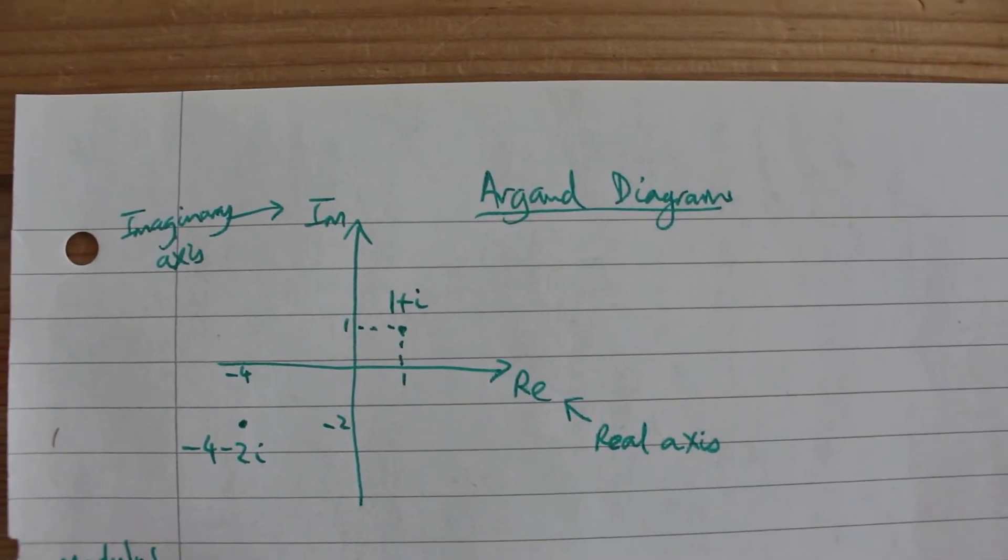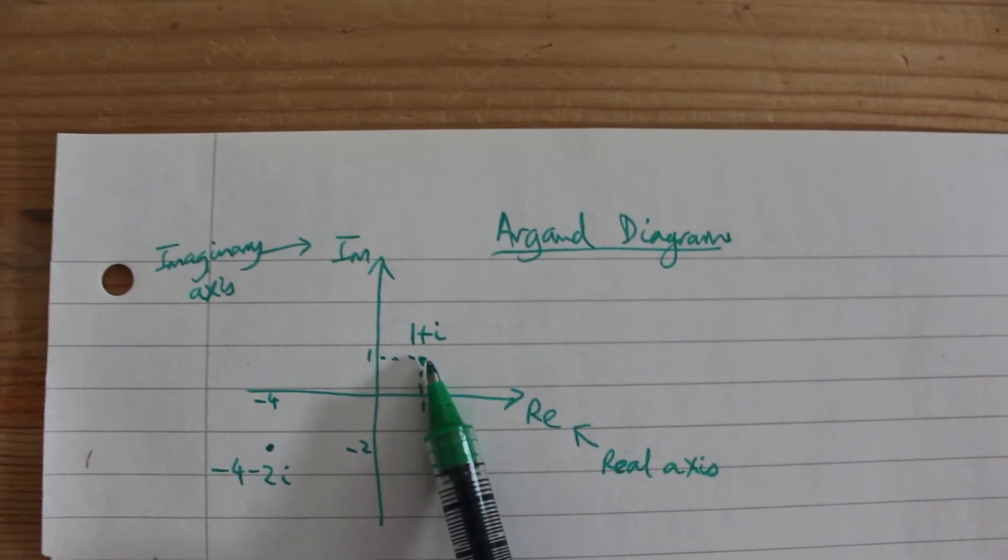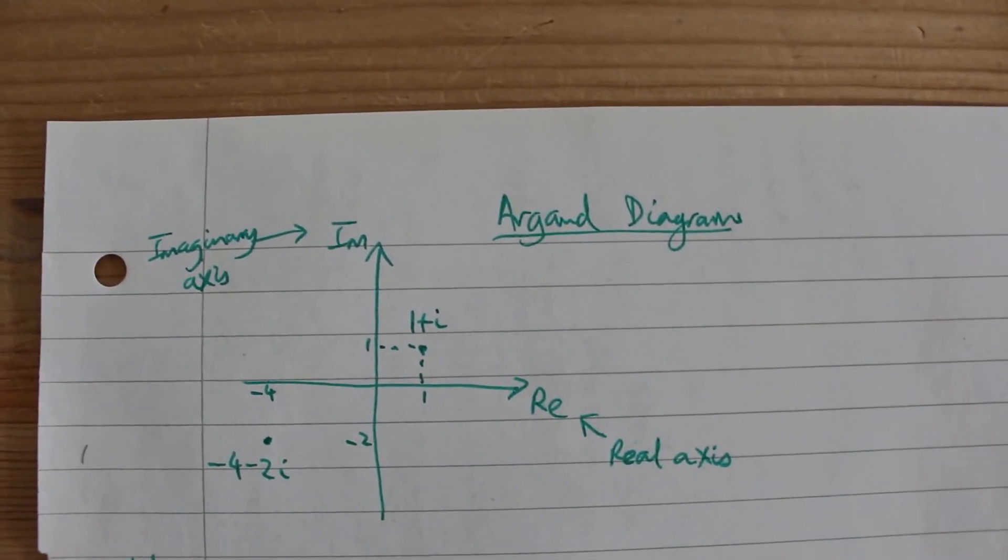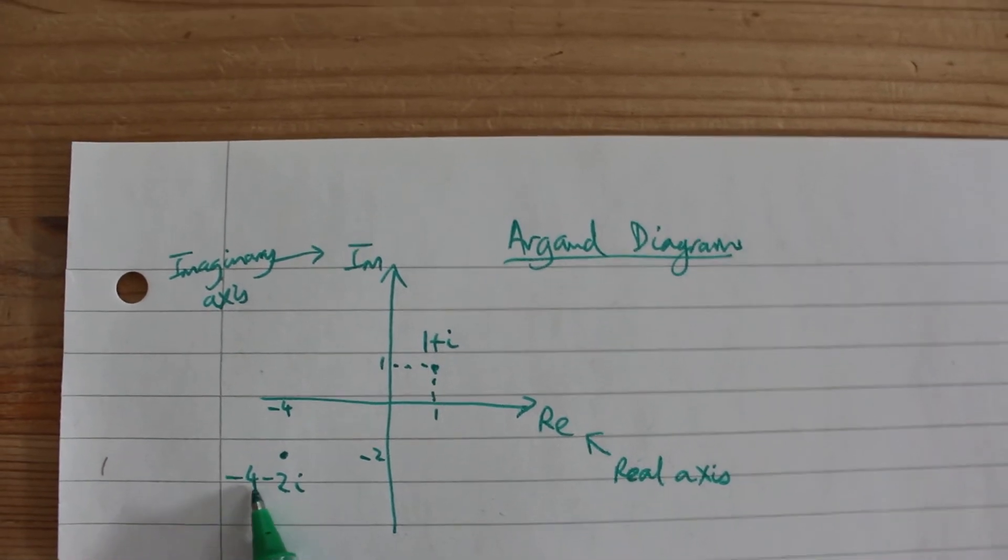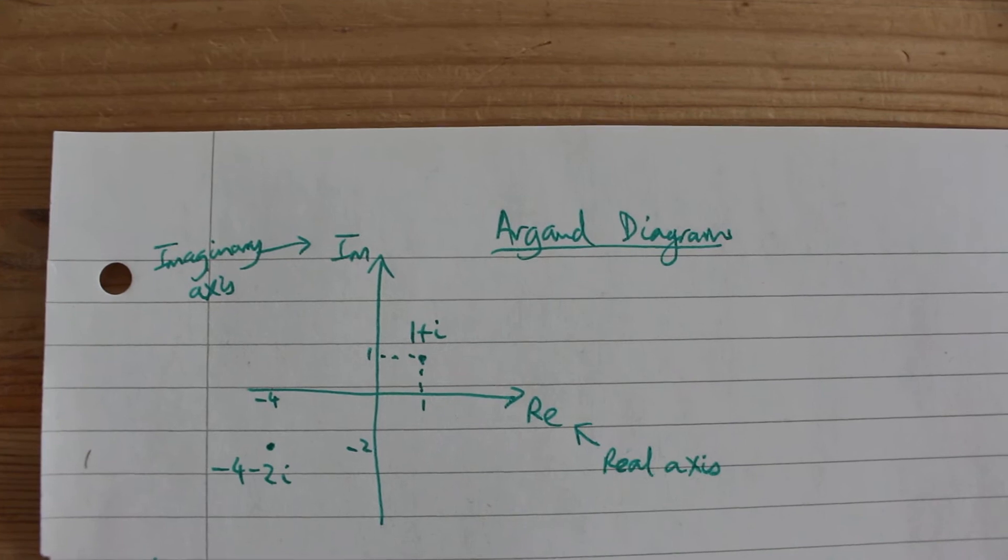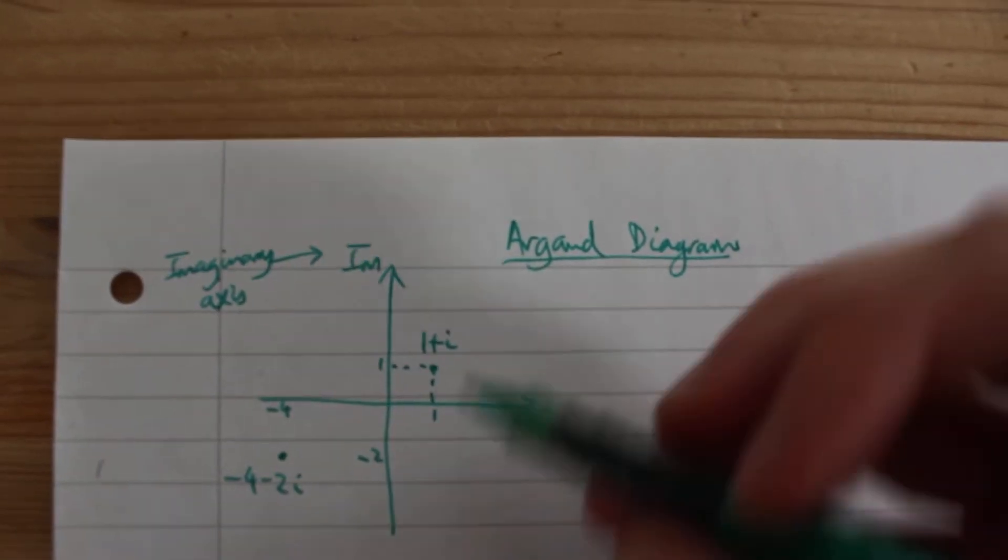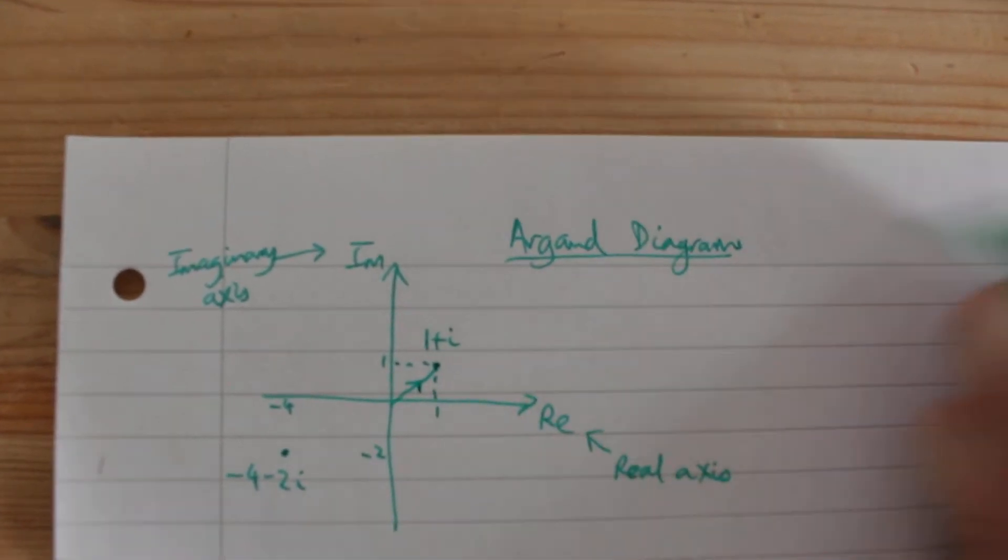So for example to plot 1 plus i we would go one across on the real axis and one up on the imaginary axis. To plot minus 4 minus 2i we go 4 across and 2 down. And some people also draw these as vectors.